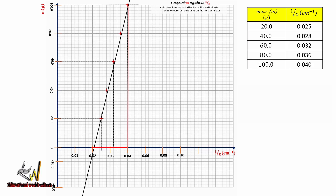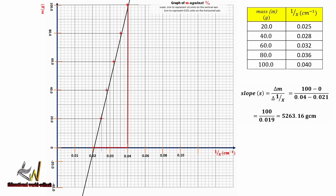The slope is the change in the vertical axis over the change in the horizontal axis. Slope S = Δm / Δ(x⁻¹) = (100 − 0) / (0.04 − 0.021) = 100 / 0.019 = 5263.16 gram·cm. Please take note of the units: gram·cm.